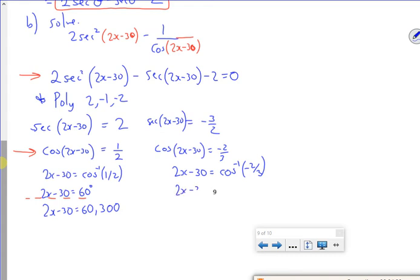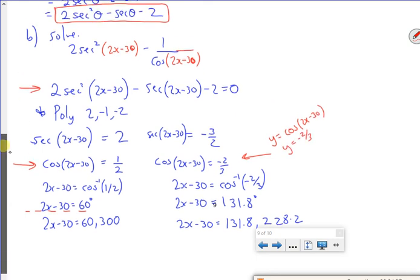Now that will give me 131 point, so 2x minus 30 is 131.8. Now the other value will be 360, take it away. So it'll be 228.2. Same idea, what I could have done was, once I've got to there, is I could have just graphed this. So I could have graphed y equals cos(2x-30).